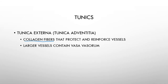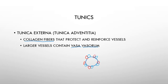In larger blood vessels we also have what's called a vasovasorum - essentially vessels of the vessels. When a blood vessel is large, it needs its own blood supply, so it has its own arteries and veins surrounding it to deliver nutrients to the different layers of the vessel wall. Smaller blood vessels can simply pull nutrients from the extracellular fluid or from the vessels themselves.